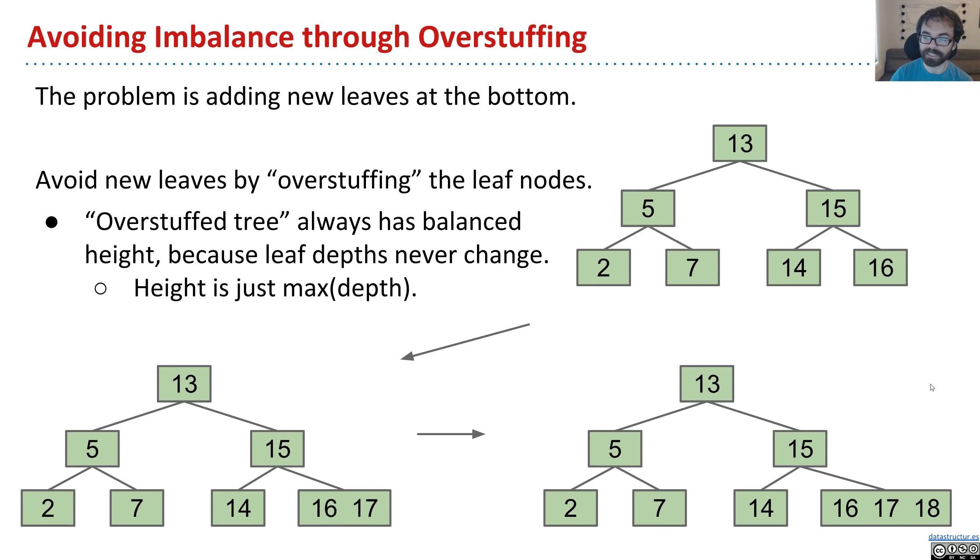That is, whenever I insert 17, instead of dangling it off the tree, I'm just going to add it to the same node that 16 was already part of. Then 18 comes along, and we'll just stick it in there. And basically, we'll overstuff the leaf nodes. And here you can see just clearly that we have perfect balance. The height is always going to stay 2 for this tree.